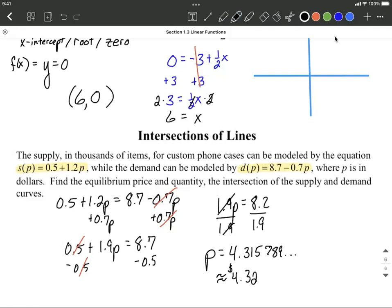All right, so that's going to be the equilibrium price. To get the quantity, we would need to take this price and plug into either one of the original functions. All right, they should both give us the exact same output value.